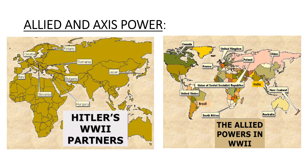During World War II, the major military alliances were the Allies and the Axis powers. The Allied powers were the countries that opposed the aggression of the Axis powers and sought to defeat Nazi Germany, Imperial Japan, and Italy. The principal Allied powers were the United States, the Soviet Union, the United Kingdom, and many more. The principal Axis powers were Nazi Germany, Imperial Japan, and Italy, who entered into agreements to support each other's goals and coordinate their actions during the war.